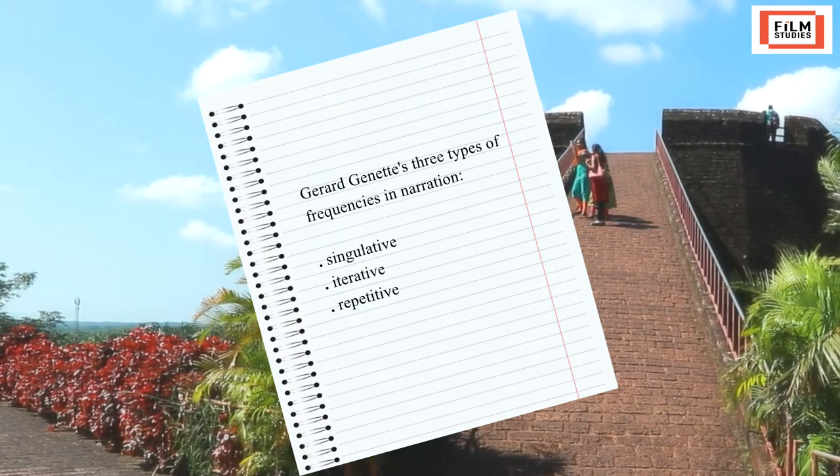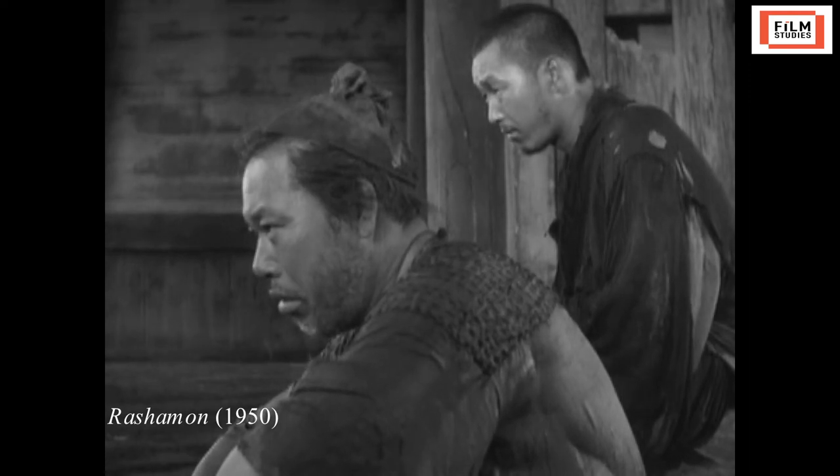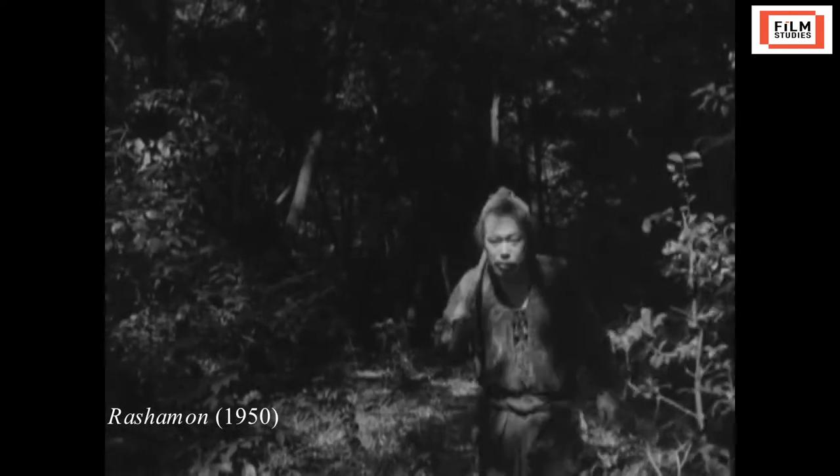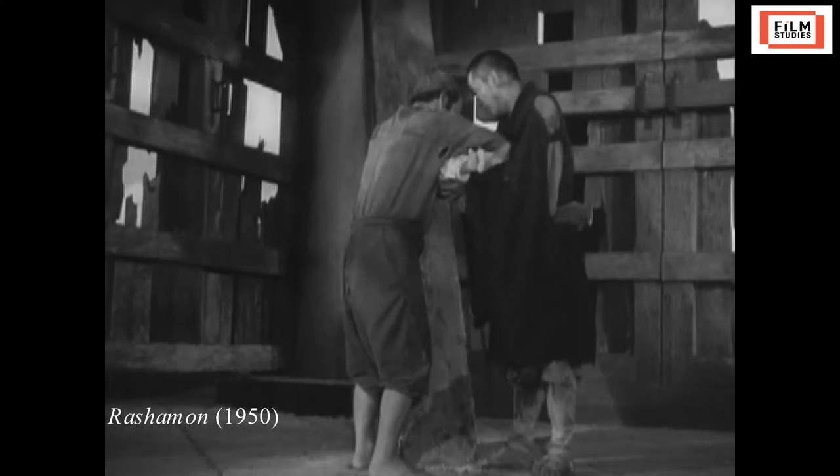Gérard Genette describes three types of frequencies in narration: singulative, iterative, and repetitive. In singulative narration, there is only one-time narration of an event. In iterative narrative style, multiple events may be presented through a single narration. A single event will be narrated repetitively in repetitive narrative format. Japanese filmmaker Akira Kurosawa's film 'Rashomon' (1950) follows the repetitive narrative pattern, presenting multiple accounts of the death of the samurai through three persons: the wife of the dead samurai, a gangster, and a woodcutter.